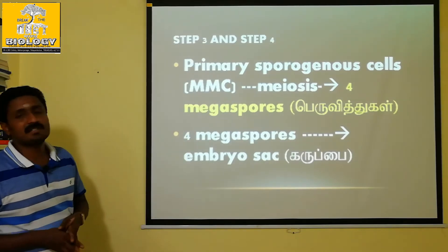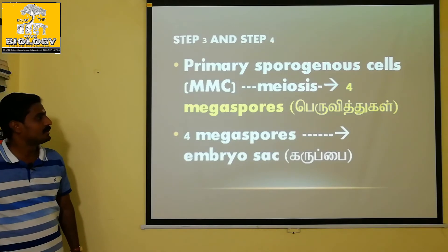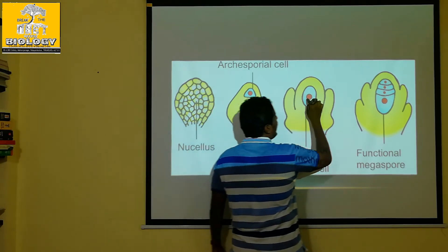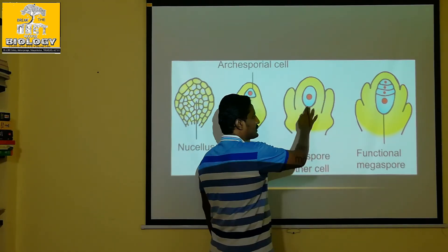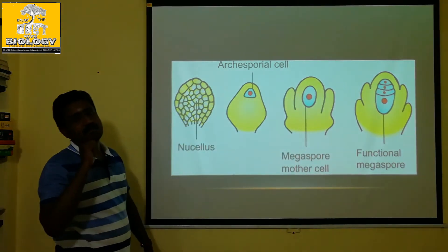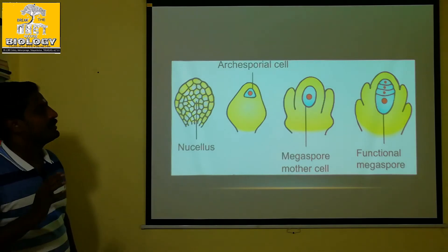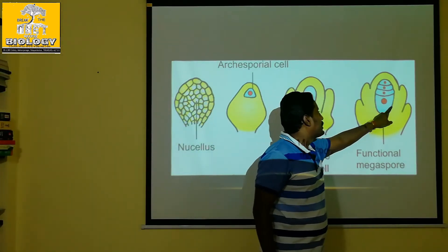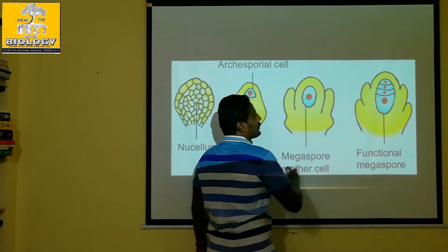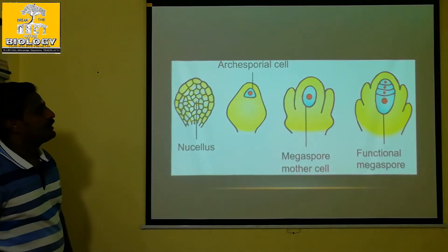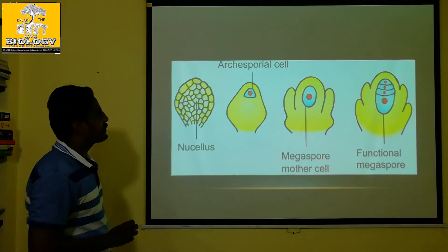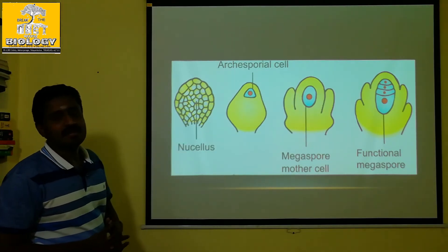Step four: in the Megaspore mother cell, which is diploid, meiosis occurs. Four haploid cells are produced. Of these four haploid Megaspores, only one is functional. The functional Megaspore develops into the embryo sac.